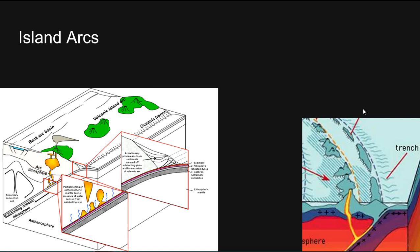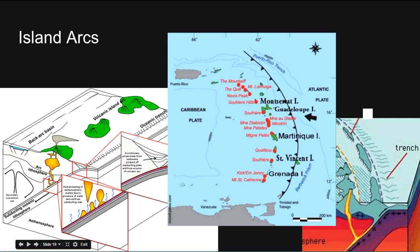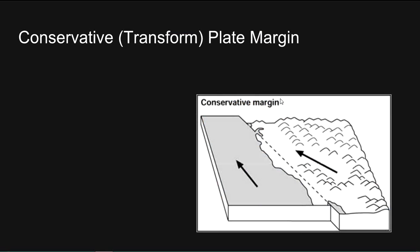Island arcs are like fold mountains but form where two oceanic crusts meet, with one slightly denser than the other. This produces islands forming under the sea, similar in process to fold mountains. An example is the Caribbean Island Arc, which includes Montserrat.